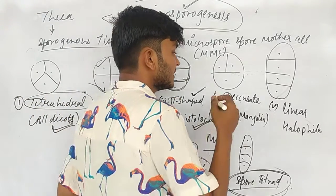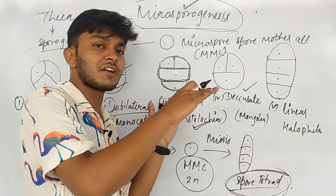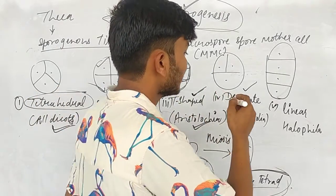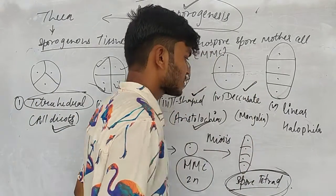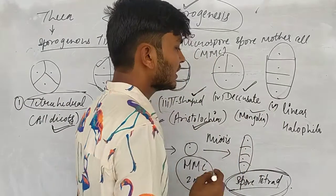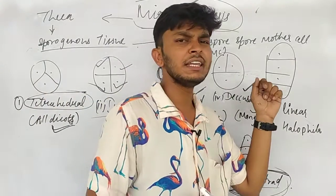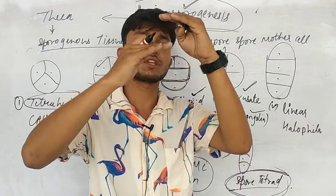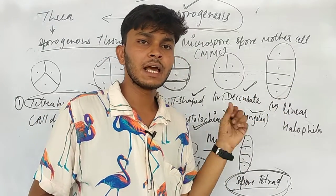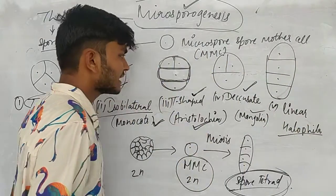In a decussate spore tetrad, two spores are found on top, one is at the bottom, and one is at the back — as seen in a two-dimensional diagram. An example of decussate is Magnolia. In a linear spore tetrad, all spores are arranged in a linear manner. An example of linear arrangement is Halophylla.